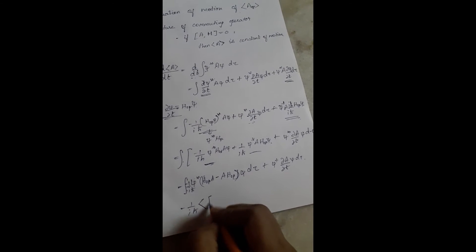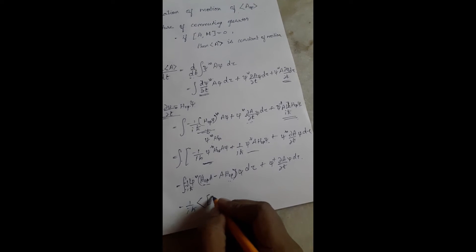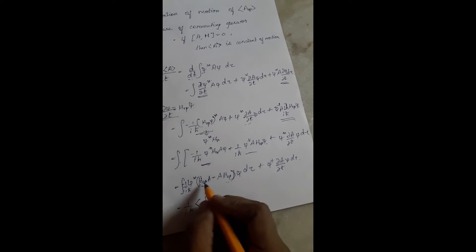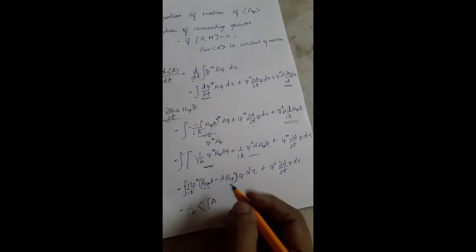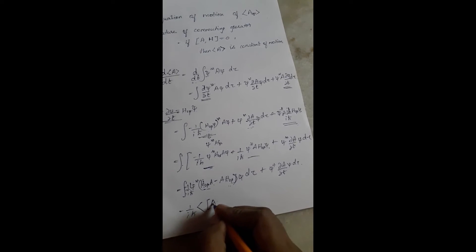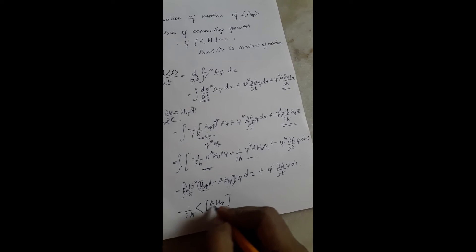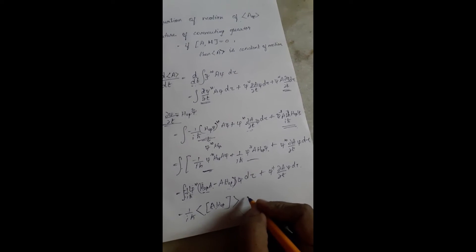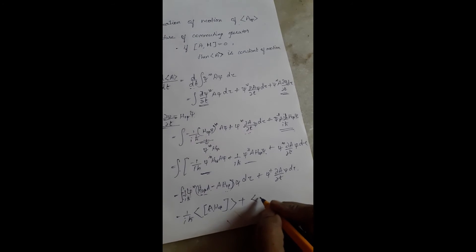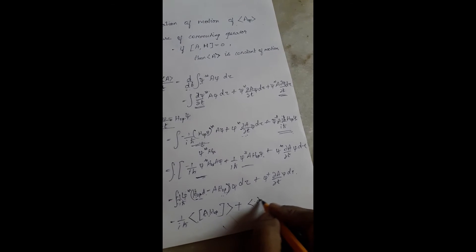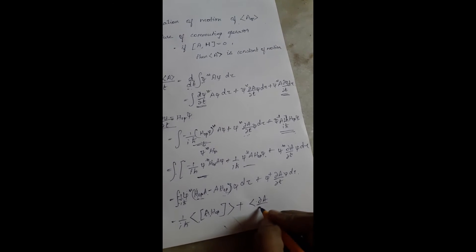This term can be written as (1/iℏ) times the expectation value of the commutation bracket. There is a minus sign here, so we can interchange the terms. This gives the commutator [A, Ĥ], plus the expectation value of ∂A/∂t.